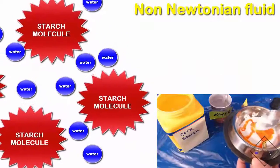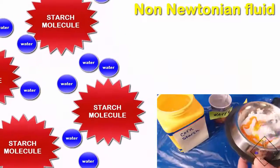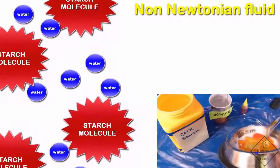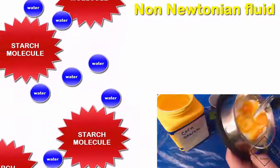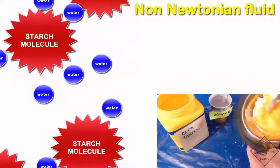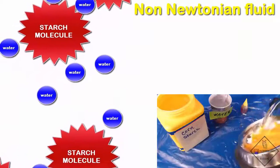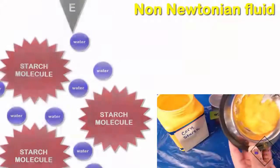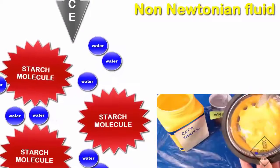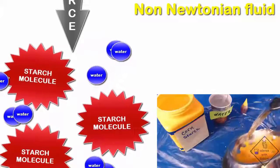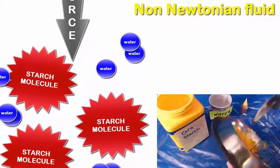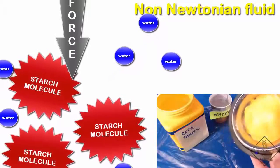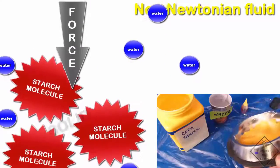The reason why is that cornstarch consists of very large molecules. And the very small water molecules serve as a lubricant between the sticky starch molecules, allowing the starch molecules to pass by each other and behave as a fluid. However, when a force is applied to this fluid, the water molecules are squeezed out of the gaps between the starch molecules, and this fluid no longer flows. Instead, it behaves like a solid.